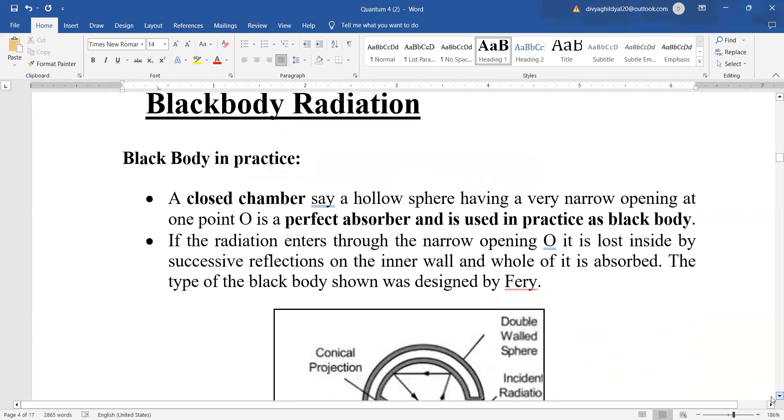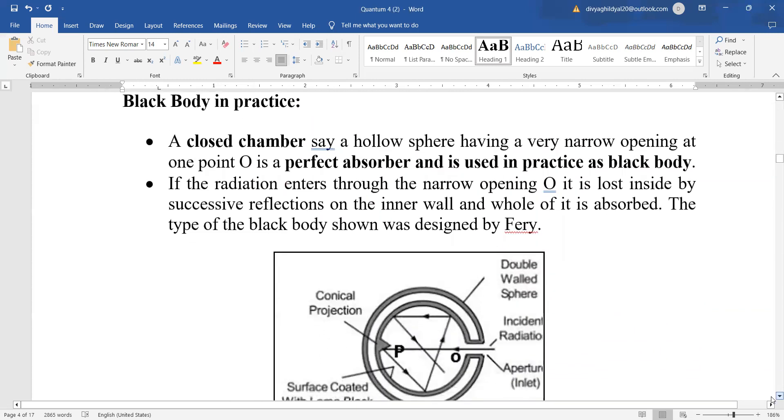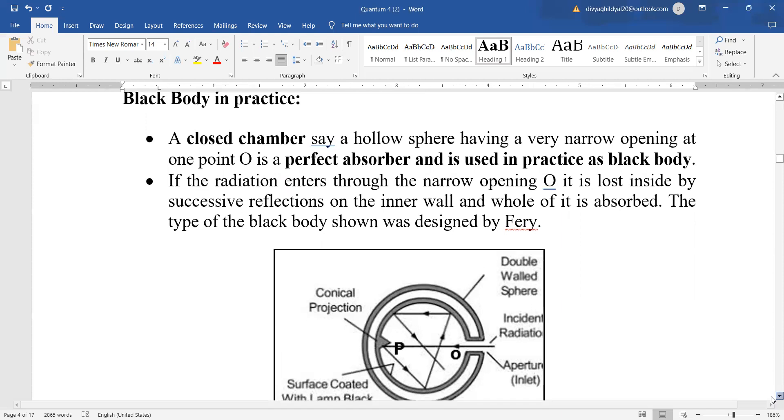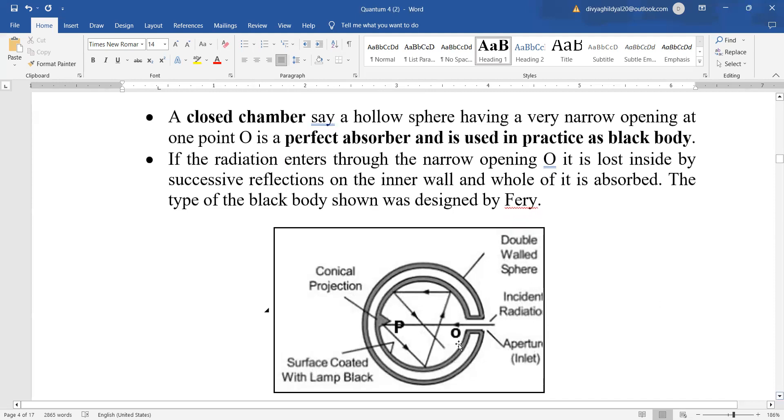What is basically a black body in practice? The very famous example is carbon arc. Here in practice, you have to explain in detail the black body. A closed chamber, look at the diagram here, say a hollow sphere, which is having a very narrow opening at a point O. This will be a perfect absorber and you can use this as a practice of black body.